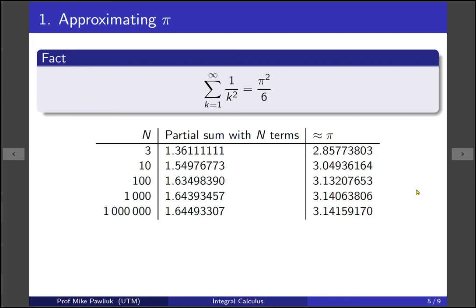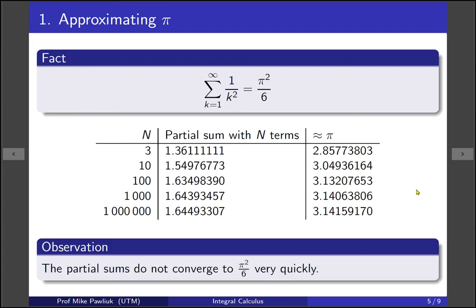So one observation we can make about this particular series is that the partial sums aren't converging to pi squared over 6 very quickly. And that's not a formal thing. It just looks like I don't really want to add up a million terms just to get an approximation to pi that has five decimal places correct. It seems like I'm going to have to do a lot of work. So is there a way for us to rearrange this or find a different setup so that our approximations will be better or faster?